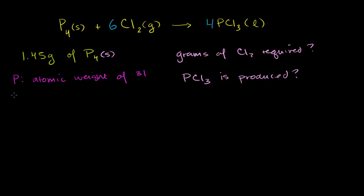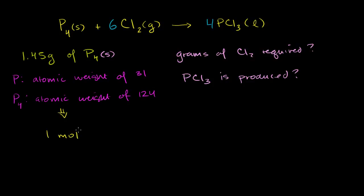Now, if you look at the atomic weight of P₄, a molecule that has four phosphorus atoms in it, it's going to be four times this. So it's going to have an atomic weight of 4 times 31, which is 124. Which means that one mole of solid molecular phosphorus is going to have a mass of 124 grams.